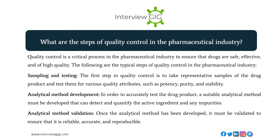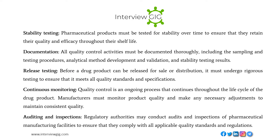What are the steps of quality control in the pharmaceutical industry? The typical steps include: sampling and testing — taking representative samples of the drug product and testing them for quality attributes such as potency, purity, and stability. Analytical method development — developing a suitable analytical method to detect and quantify the active ingredient and any impurities. Analytical method validation — ensuring the method is reliable, accurate, and reproducible. Stability testing — testing pharmaceutical products for stability over time to ensure they retain quality and efficacy throughout their shelf life.